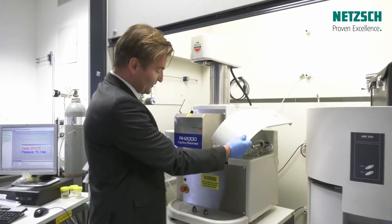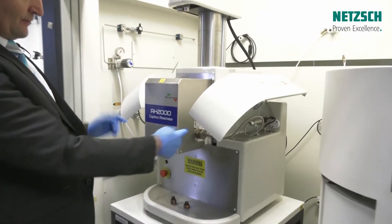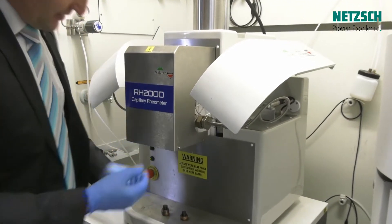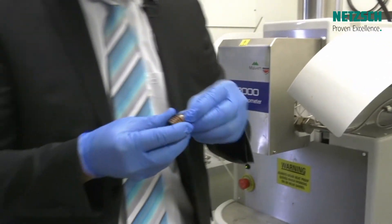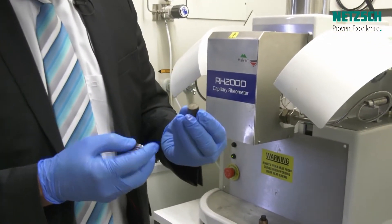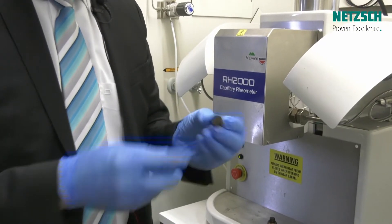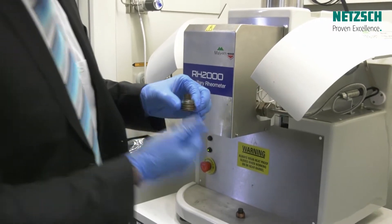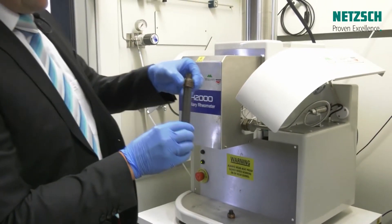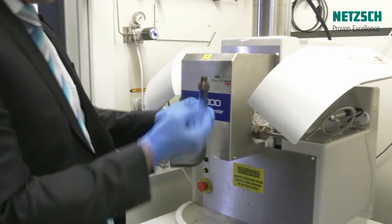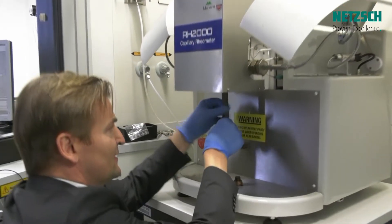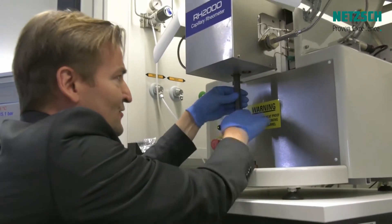First of all we have equipped the machine with two pressure transducers. These pressure transducers measure the force we need to push the material through a capillary die. This is a circular shaped capillary die with one millimeter diameter and the length of 60 millimeter. This comes into the die holder and we place now the die into the barrel bore of the RH2000 with the Allen key. Underneath the machine we can screw the die into the barrel.